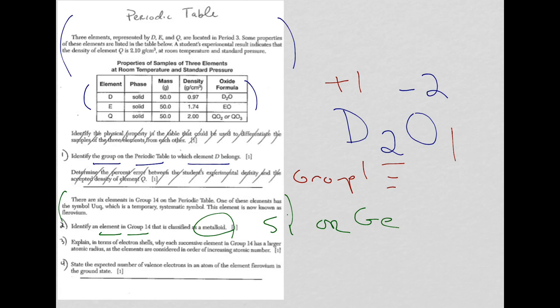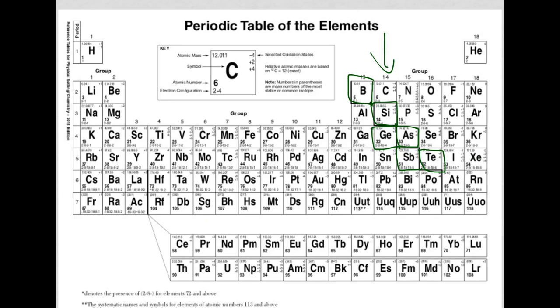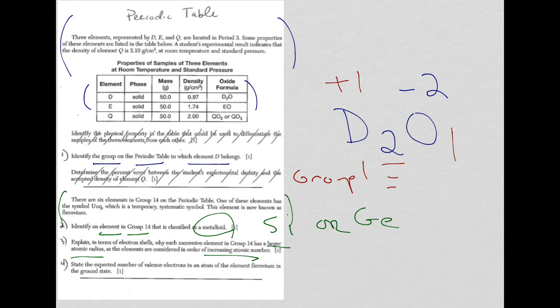Question 3. Explain in terms of electron shells why each successive element in Group 14 has a larger atomic radius as the elements are considered in order of increasing atomic number. Let's take a look. In order of increasing atomic number, look at what's going on as far as electron configuration. You're adding another shell of electrons. So the number of electron shells increases as you go down the group, which means that you have a larger atomic radius as you go down the group. The number of shells increases as I go down the group, which increases the atomic radius.